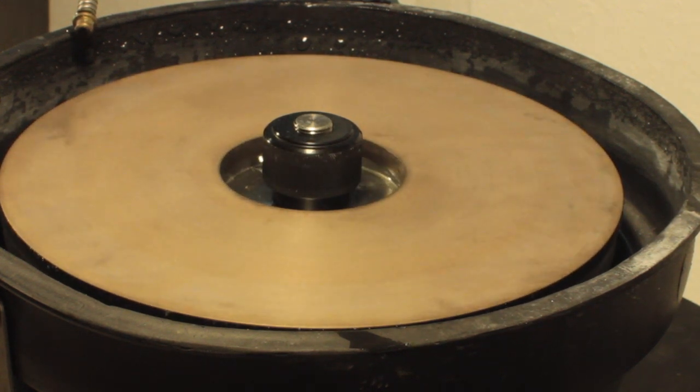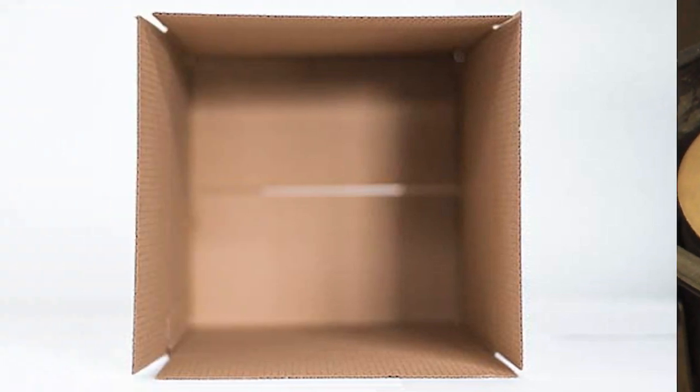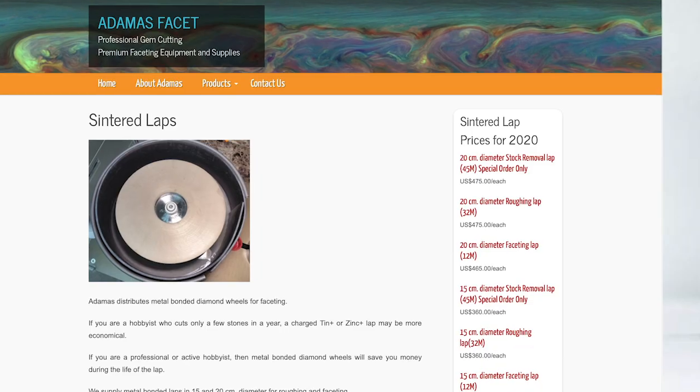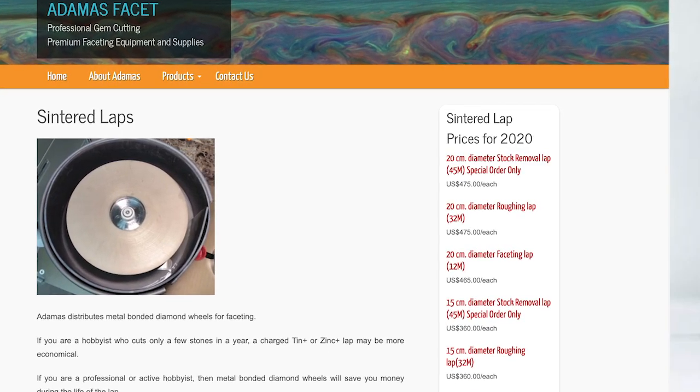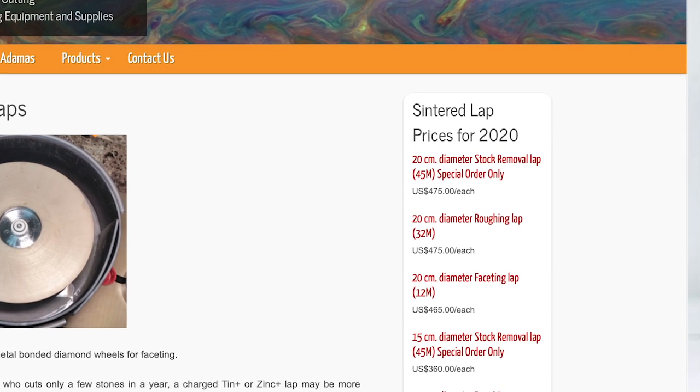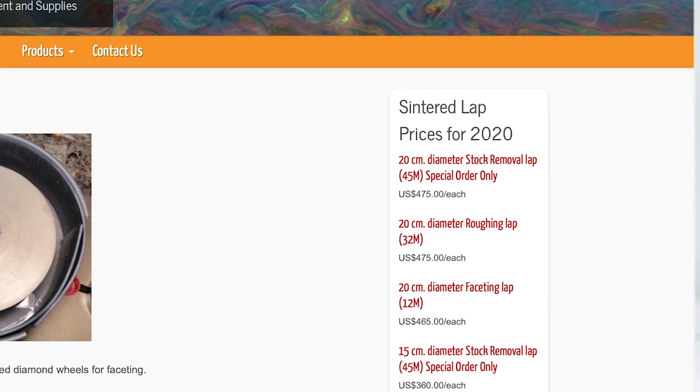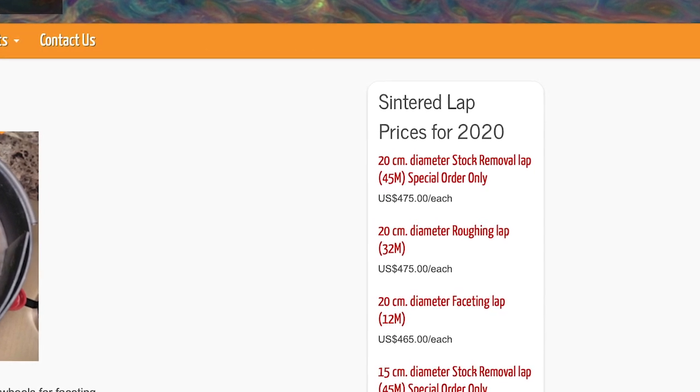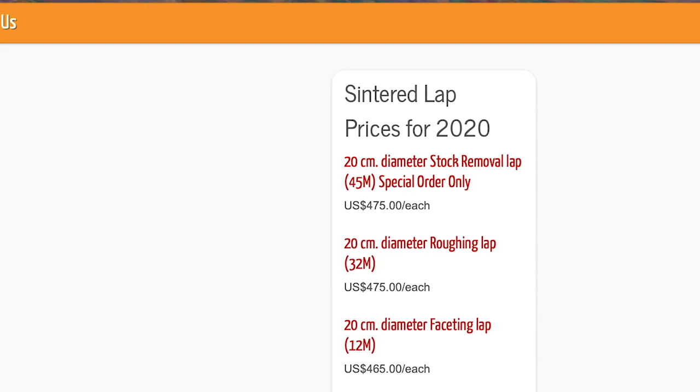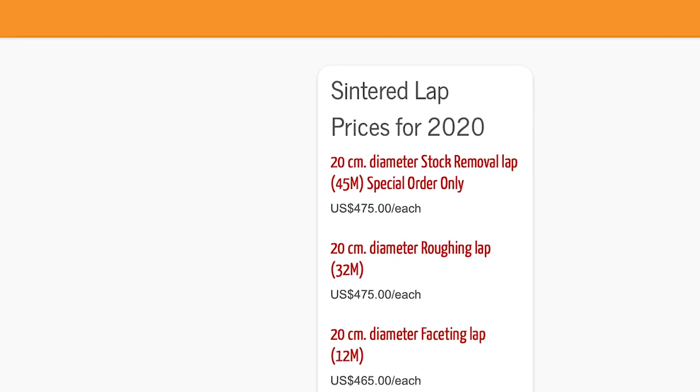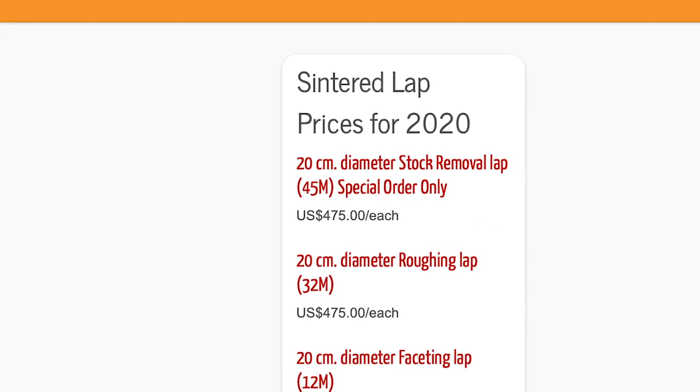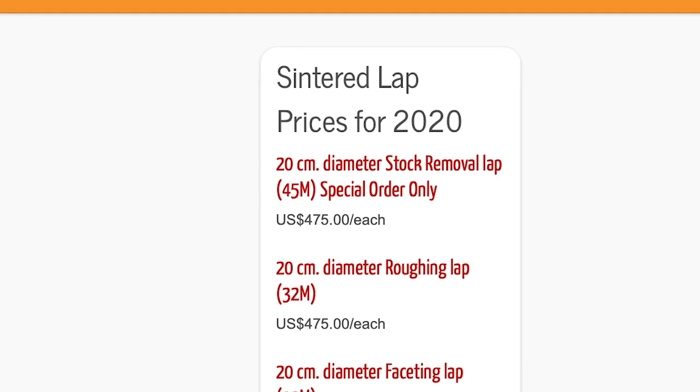Then you put it away for the next use. Tom also offers a 32 micron and a 45 micron wheel or lap. That 32 micron is roughly equivalent to the standard 600 grit lap that I use, that most cutters seem to use. And the 45 micron wheel is equivalent to a 325 grit lap. I use a topper, but I use something like a 325 to 360, somewhere in that range.